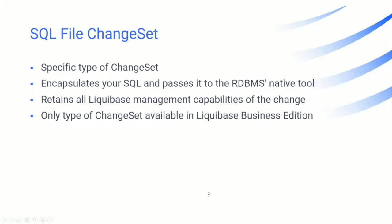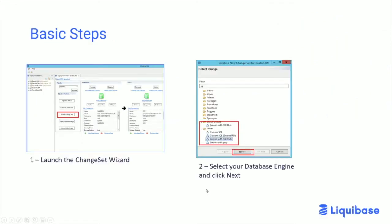So let's take a look at how you actually use this functionality. From within the Liquibase GUI, you will launch the changeset wizard using the Edit Changeset button on the left middle of the display, just to the left of the status display. Then choose the type of changeset that's appropriate for your database engine.